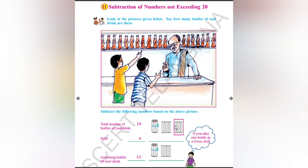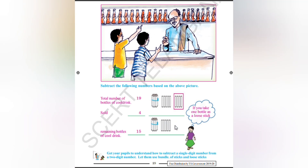Look at the pictures given below. Say how many bottles of cold drinks are there. We can see here — subtract the following numbers based on the above picture. That is 19 bottles are present here. One bundle means how much? One bundle means 10. Then how many are remaining? Here 5 is remaining.